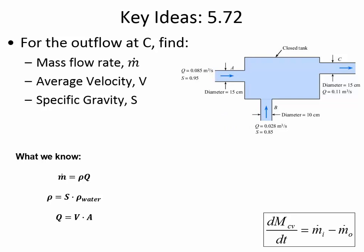Here's the simplified version of the Reynolds transport theorem that we apply when there's no reaction happening inside of the control volume. In this case, although there's mixing of two substances, there's no chemical reaction. There's also no accumulation inside the control volume, so the left-hand term — the mass of the control volume with respect to time — is zero. Mass in equals mass out. They've given you all the information to define the mass flow in at A and B, so you find the flow out in terms of mass flow rate, then find velocity and specific gravity.